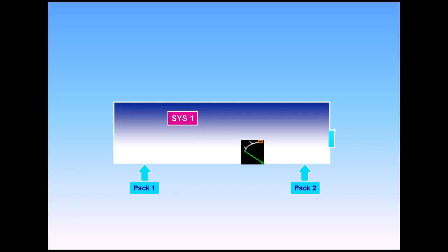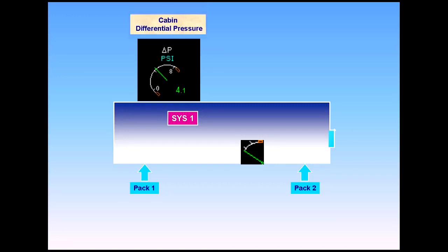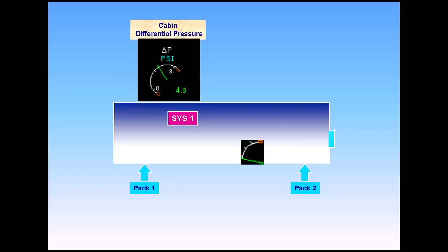Let us look at the operation of the outflow valve for an aircraft in cruise and what happens to cabin differential pressure, cabin altitude, and cabin vertical speed. We will start with cabin differential pressure. If the outflow valve is closed or only allowing a small amount of air to escape, then the cabin differential pressure will increase.